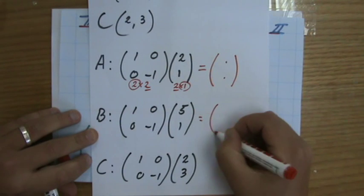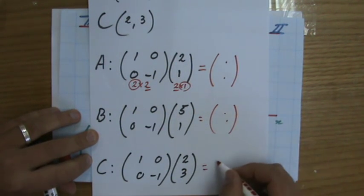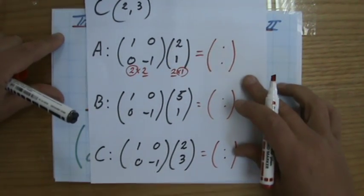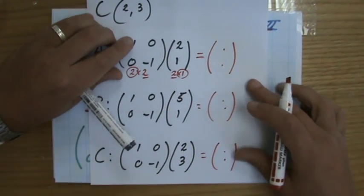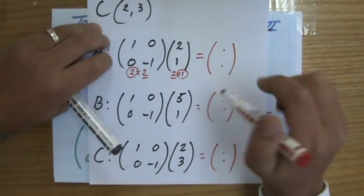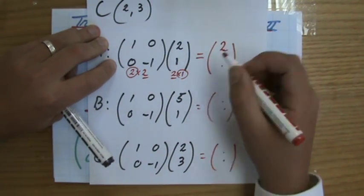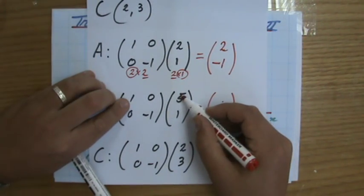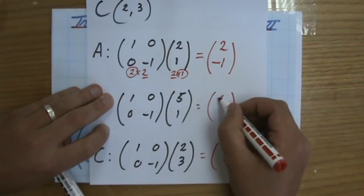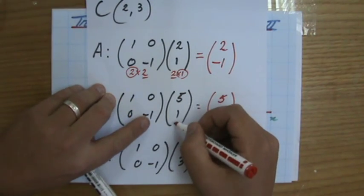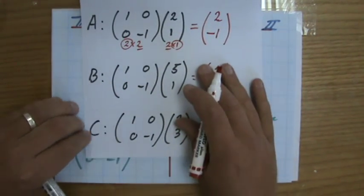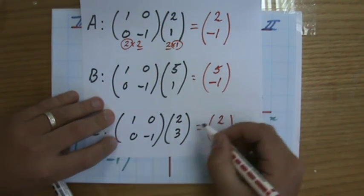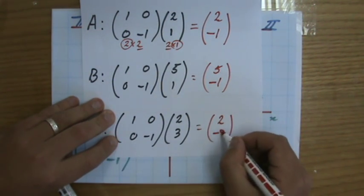And I multiply that. And I'm going to do that relatively quickly. I show you in different videos how to multiply matrices. So hopefully you're able to do that. So it's going to be 2 plus 0, that's 2. And it's going to be 0 plus minus 1, it's minus 1. It's going to be 5 plus 0, it's going to be 5. And 0 plus minus 1, it's going to be minus 1. And here at the bottom it's going to be 2 plus 0, and 0 plus minus 3.